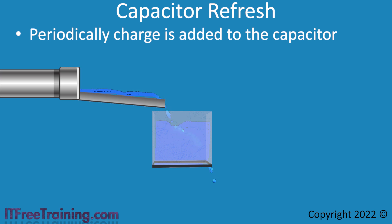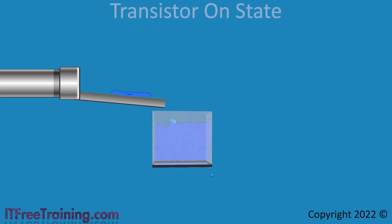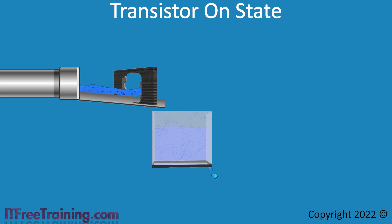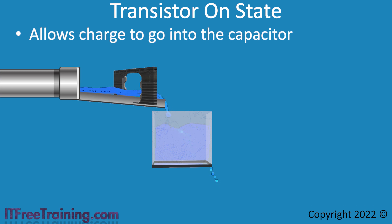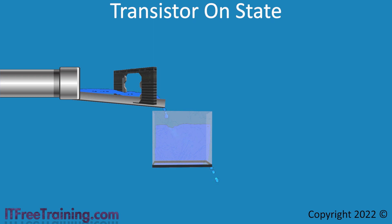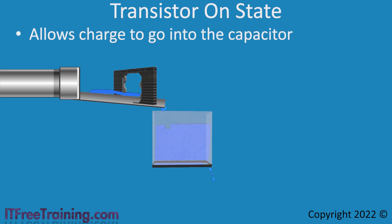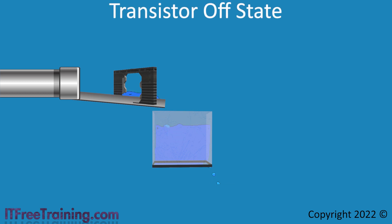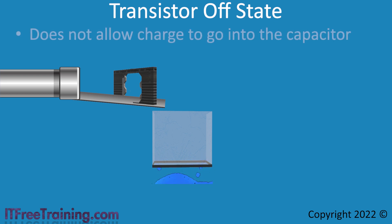But what happens if the capacitor holds no charge and thus is a 0 bit? In this case, we want to prevent charge from going into the capacitor. To have some control over whether the capacitor is topped off with charge, this is where the transistor comes into play. In this example, I have used a door to represent the transistor. In the open state, the door will allow water to flow to the tank. In a memory module, the transistor is connected to the capacitor, and if the capacitor is charged, the transistor will allow power to travel to the capacitor and charge it. When the capacitor is empty, it is a simple matter of draining the power from the capacitor. Once this is done, the transistor is no longer powered and will not allow power to the capacitor — the doors will close and water will no longer be able to flow in. This is the basics of how capacitor-based RAM works.